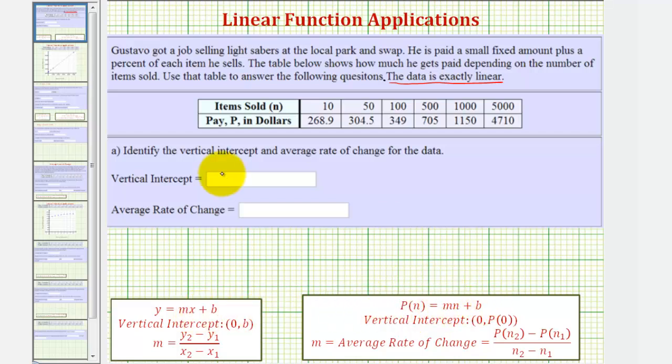Let's begin by determining the average rate of change, which would be the change in the function value divided by the change of the input, or in our case, the change in pay divided by the change in the number of items sold. And because our table is linear, we can pick any two ordered pairs to find this quotient.